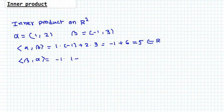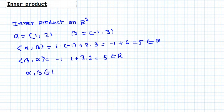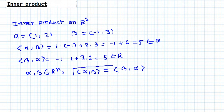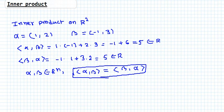What about (beta, alpha)? You can see that (-1)×1 + 3×2 gives the same answer, 5. So the standard inner product is commutative in the sense that for two vectors in Rn, the inner product (alpha, beta) equals the inner product (beta, alpha). You can treat this as one of the properties of the inner product.